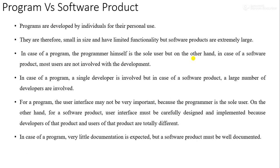The user and the developer of a program are totally two different kinds of entity. In case of a program, a single developer is involved, but in the case of a software product, a large number of developers are involved. For a program, the user interface may not be very important because the programmer itself uses that program. On the other hand, for a software product, the user interface must be carefully designed and implemented because developers and users are totally different. In case of a program, very little documentation is needed, but a software product must come with documentation.